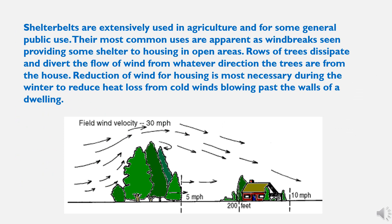Their most common uses are apparent as windbreaks providing shelter to housing in open areas. Rows of trees dissipate and divert the flow of wind from whatever direction the trees are from the house. Reduction of wind for housing is most necessary during winter to reduce heat loss from cold winds blowing past the walls of a dwelling.